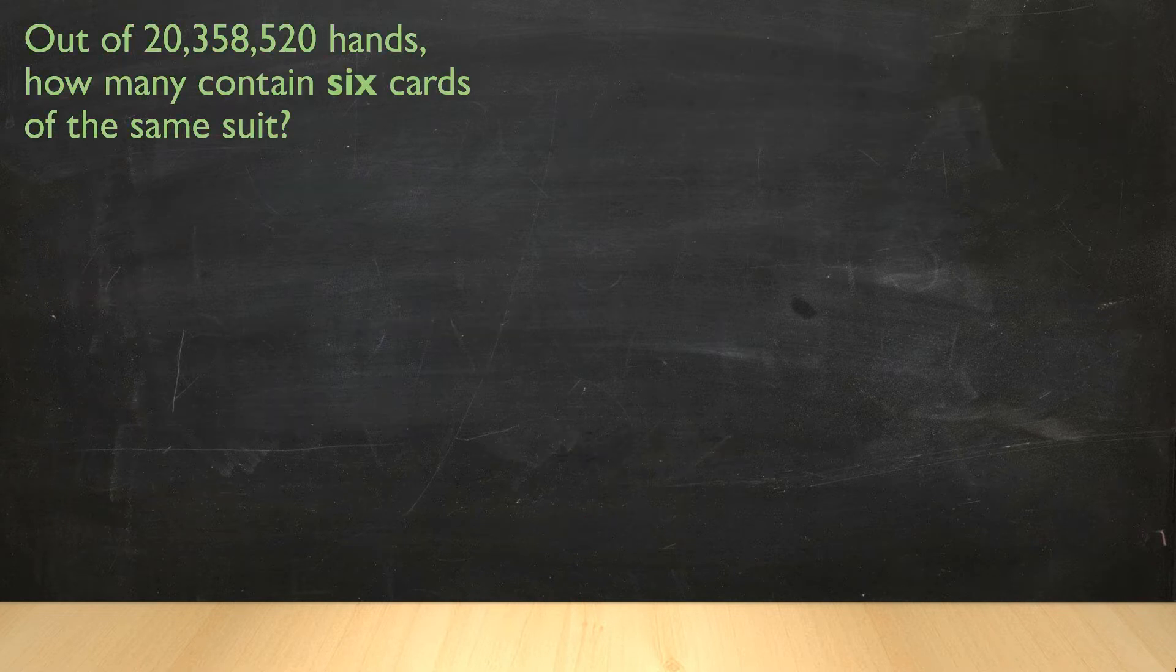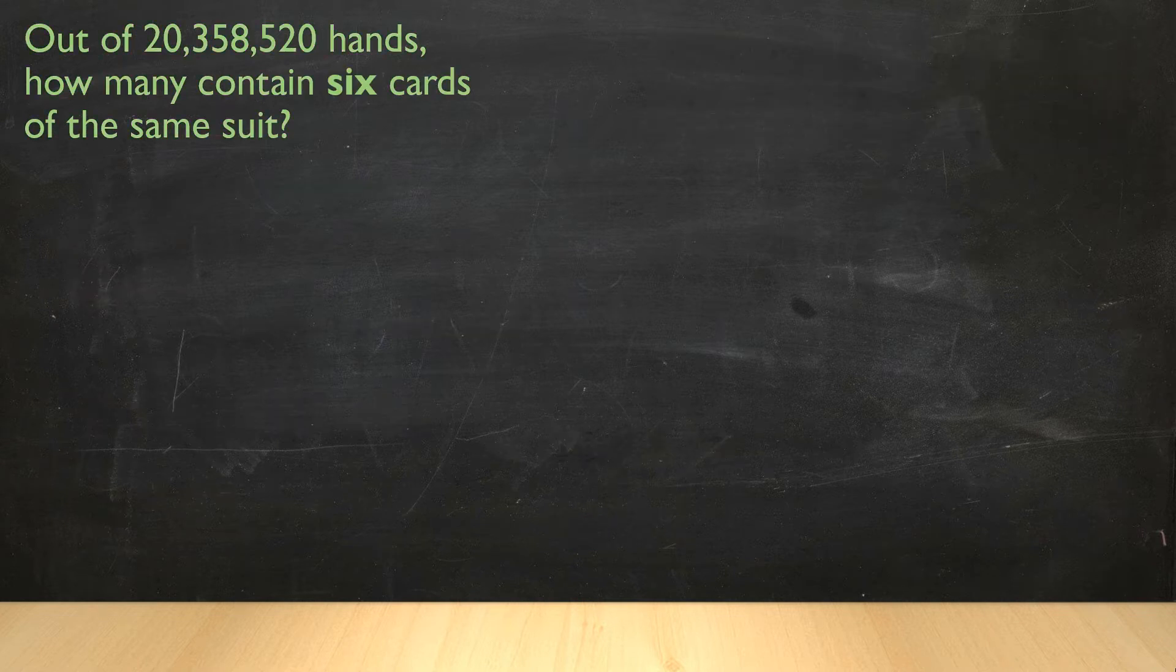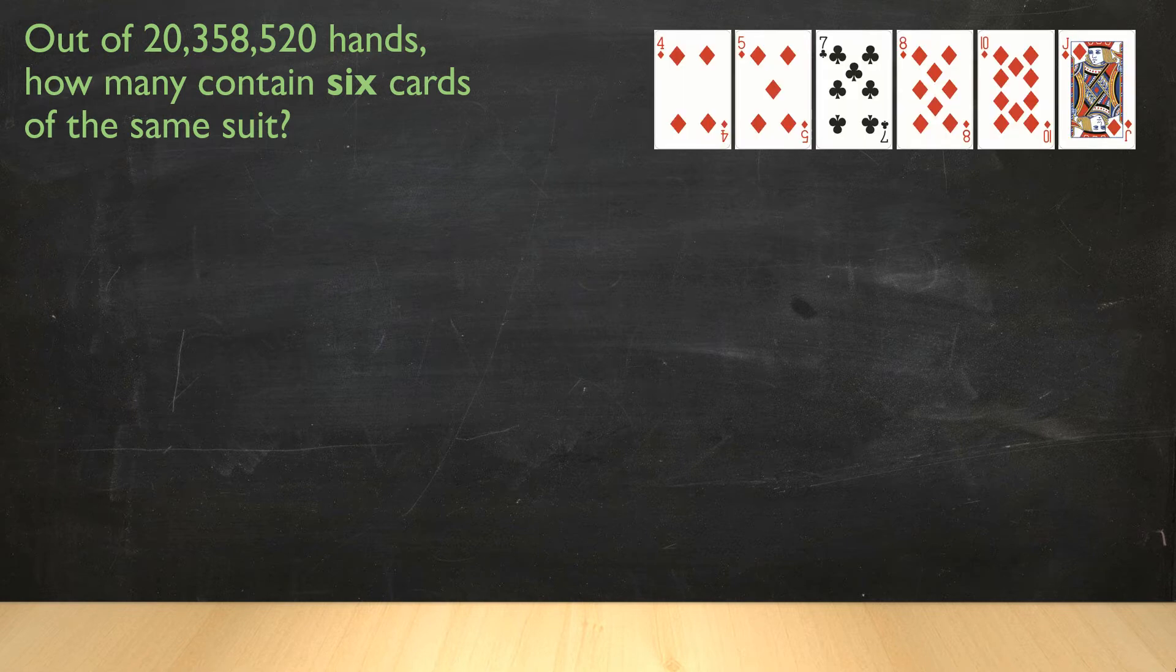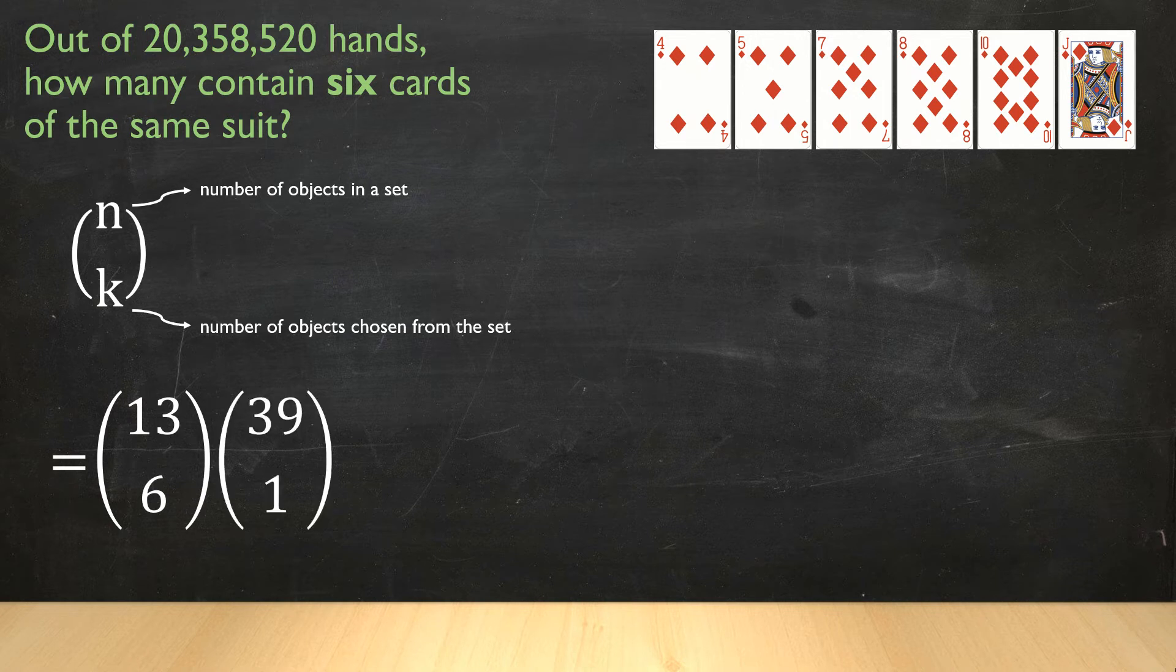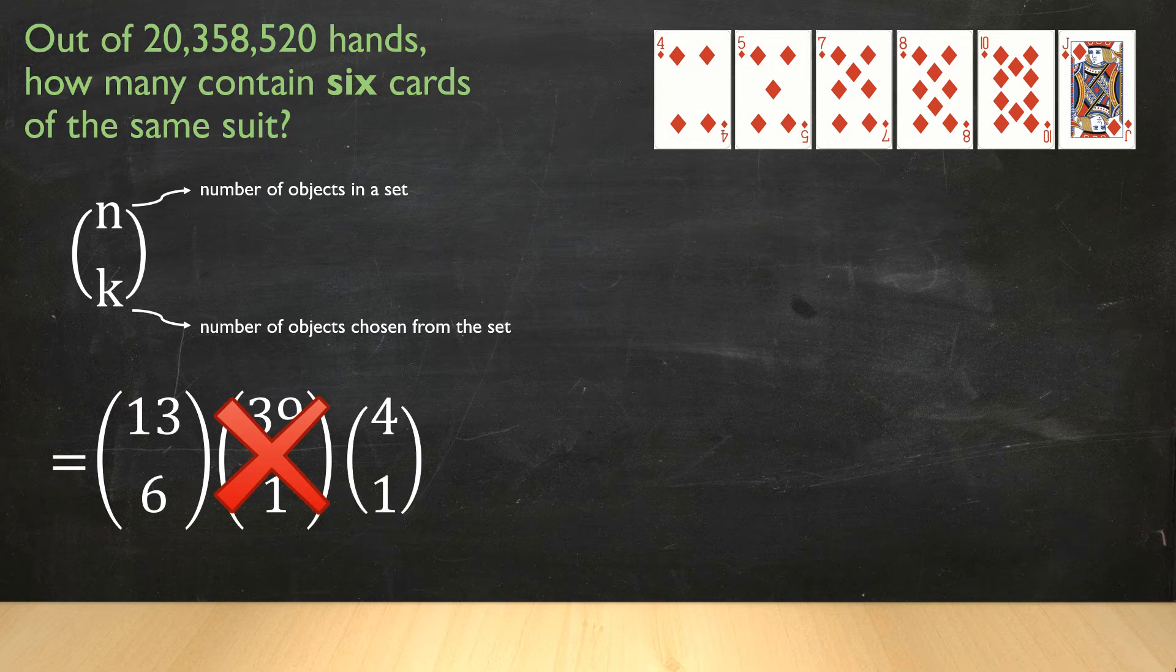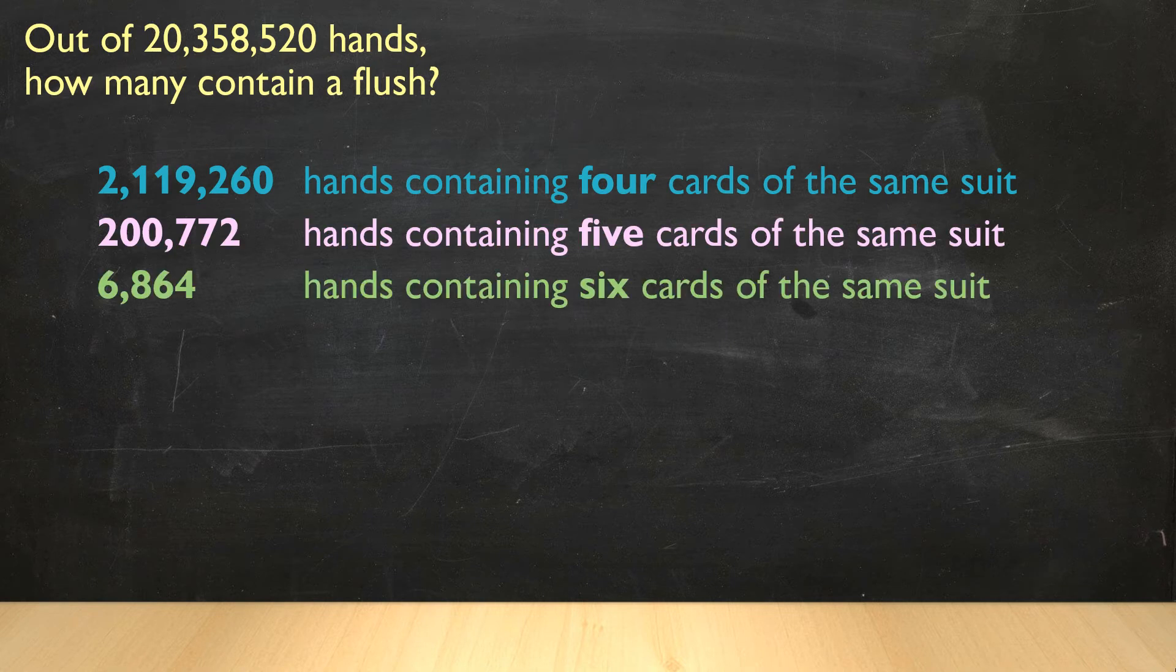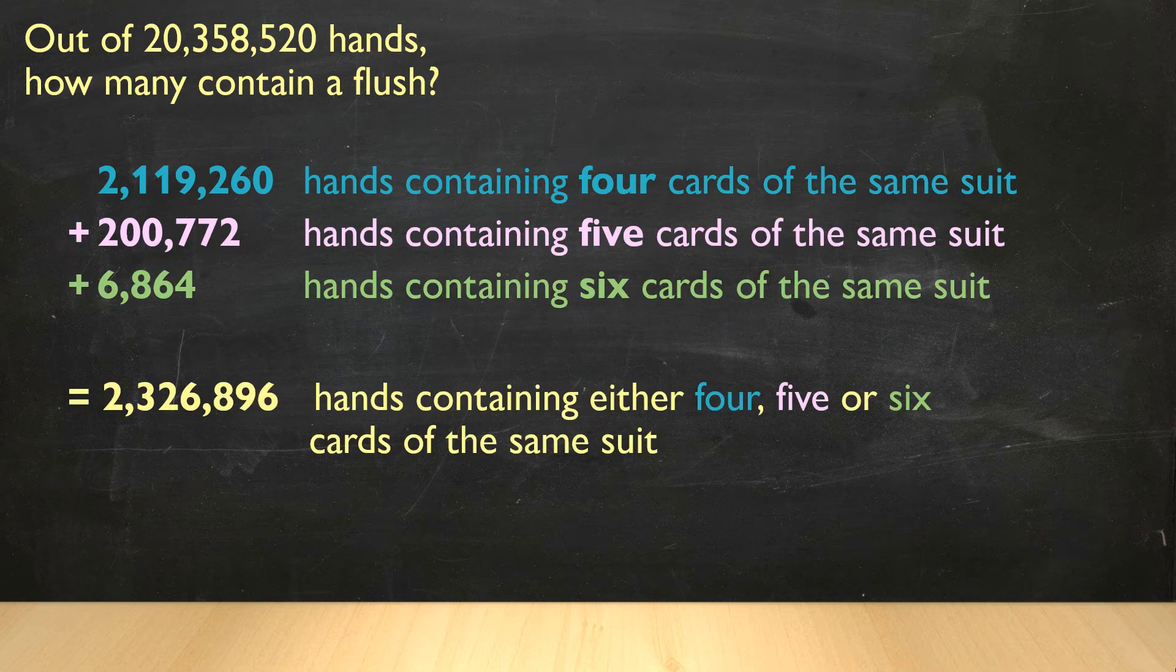Now we want to calculate the number of hands where all six cards are the same suit. Our N value, number of objects in our set, is still 13. Our K value, the number of objects we want from that set, is now six. So 13 choose six. We don't need any more cards to make up our hand, because we already have six. So that gives us 6,864 hands where all six cards are the same suit. Now we can add those together to give us the total number of hands that contain a flush possibility. We add our numbers up, and we get 2,320,896 hands that contain a flush.